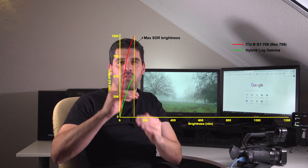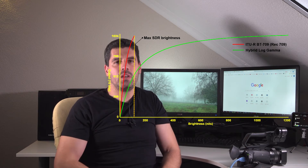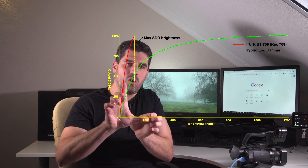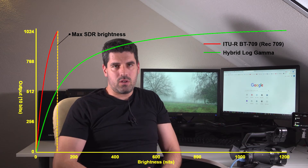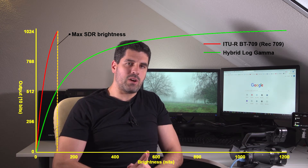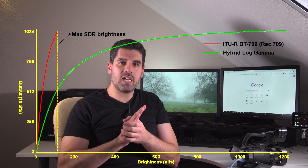Why is it called hybrid? Because up to 100 nits it is exactly the same as 709, multiplied by 0.5. This satisfies the second requirement — retro-compatibility — because SDR systems working in full HD can use only the lower part of the gamma curve, while HDR equipment can use the whole range. Third, and very importantly, S-Log, C-Log, and V-Log are aimed at post-production, but HLG is not. Color grading is not its main purpose.